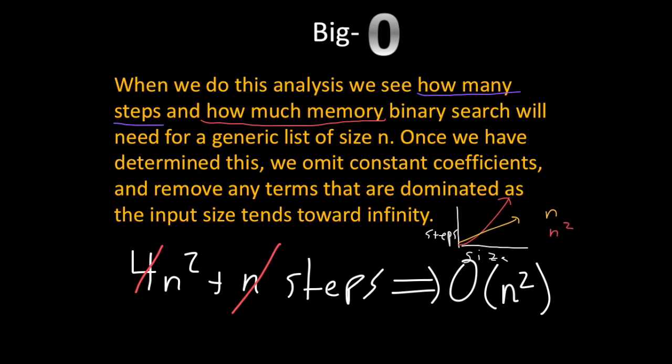So you may wonder, you know, I understand that all we have to do is remove constant coefficients and any terms that are dominated. But why do we have to do this? Well, big O is what's called an asymptotic analysis where we're interested in the behavior as the input size grows toward infinity.